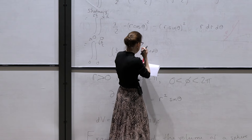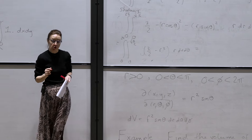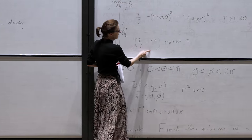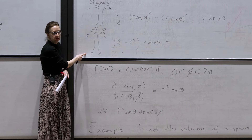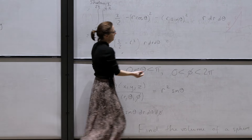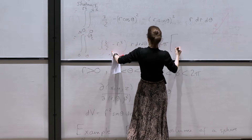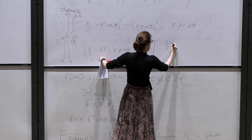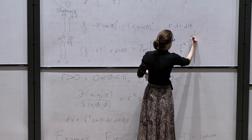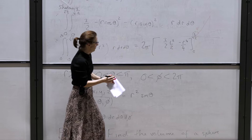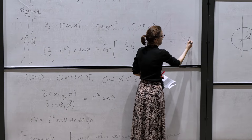This becomes the integral from 0 to 2pi, 0 to √(3/2), of (3/2 - r²) r dr dtheta. The first thing to notice is there's no theta in the integrand — it doesn't depend on theta — so when I integrate with respect to theta, I just pick up a 2pi. Then integrating with respect to r gives 3/2 · r²/2 - r⁴/4 between 0 and √(3/2), and if I've done the algebra correctly, the answer is 9pi/8.